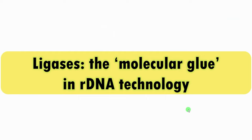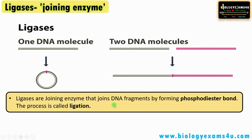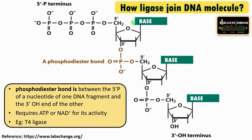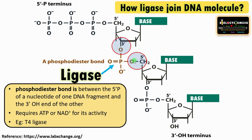Moving into ligases — called the molecular glue in recombinant DNA technology — as they seal or join two DNA fragments. Ligases are joining enzymes that join DNA fragments by forming phosphodiester bond; this process is called ligation. The phosphodiester bond is formed between the 5' phosphate of one nucleotide fragment and the 3' OH of another fragment. Ligase enzyme joins and forms a phosphodiester bond in the presence of ATP, sealing the nick or single-stranded break. It requires ATP or NAD+ for its activity. An example is T4 ligase.